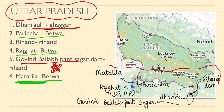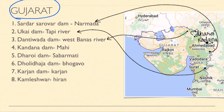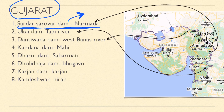Next state is Gujarat, which is very important because it has the Sardar Sarovar Dam. Sardar Sarovar Dam was recently inaugurated about two years ago - a statue of Sardar Vallabh Bhai Patel is nearby. What is the name of that statue? Tell me in the comments! Sardar Sarovar Dam is on the Narmada River.